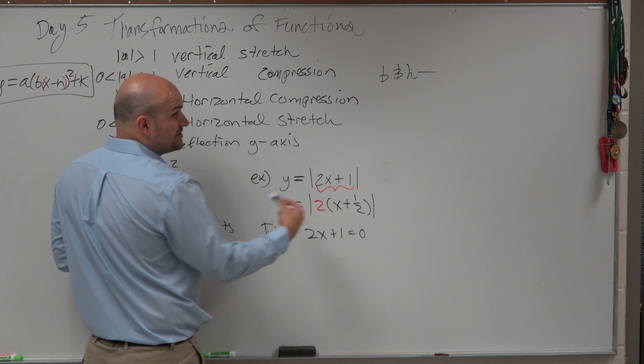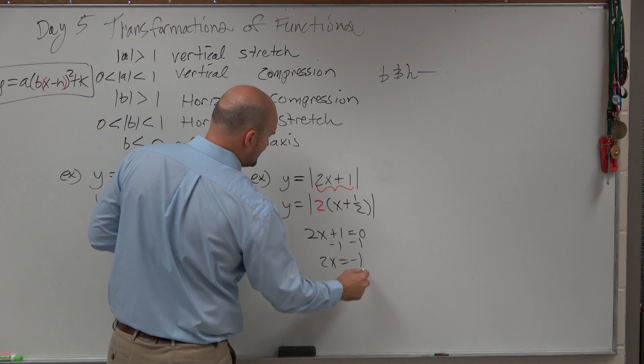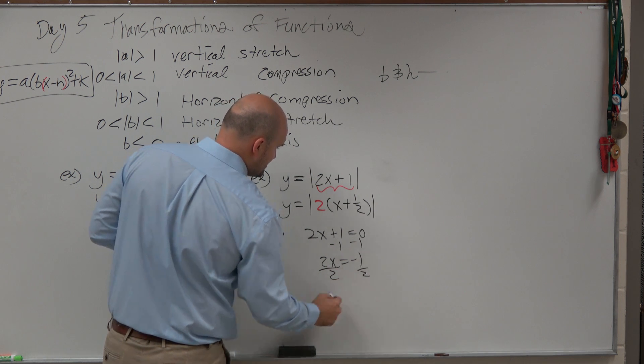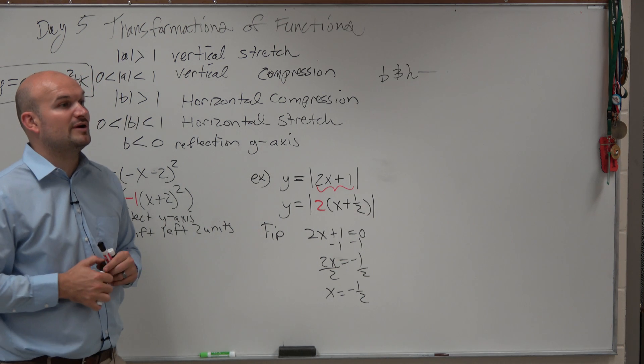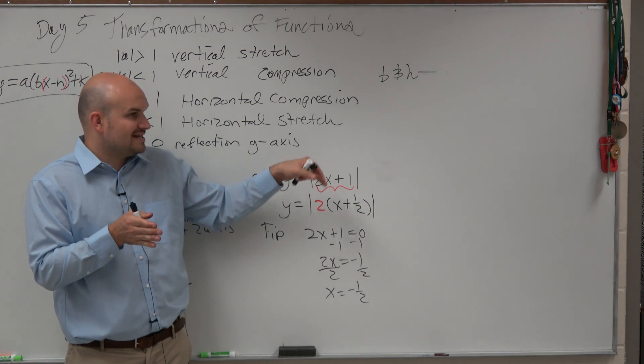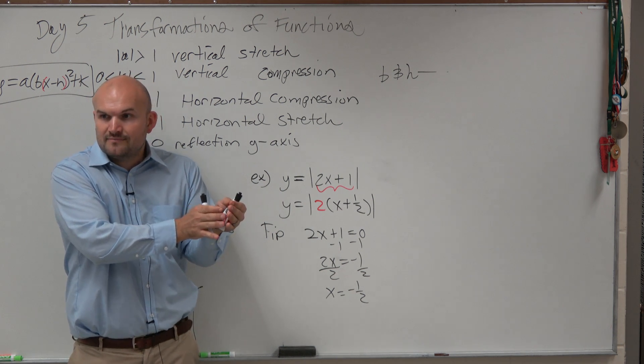And then solve. So if you like factoring, do factoring. There's no problem with it. But if you get stuck and you don't like fractions and you're just confused, just set it equal to 0. x is equal to negative 1 half. Now what that's telling you is the graph is being shifted to the left 1 half.